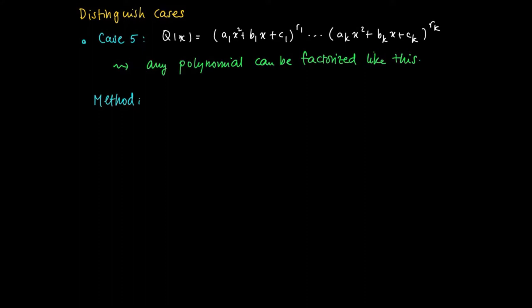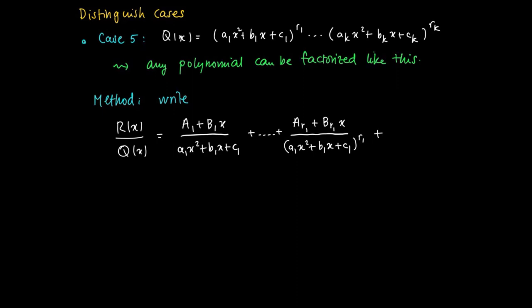Any polynomial allows for a factorization like this, and the general method is similar to what we've seen before. Only now we try to find an alternative description of R(x) divided by Q(x) in the sense that we take powers of the quadratic, at most quadratic term, and the powers run to r1.